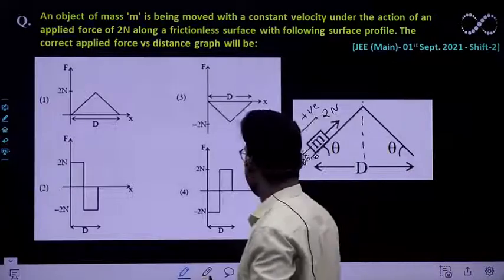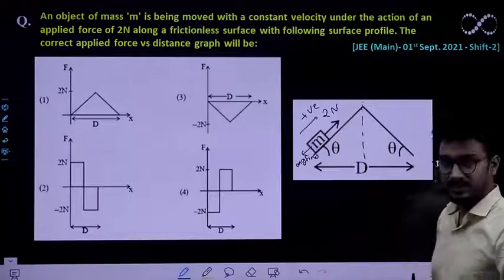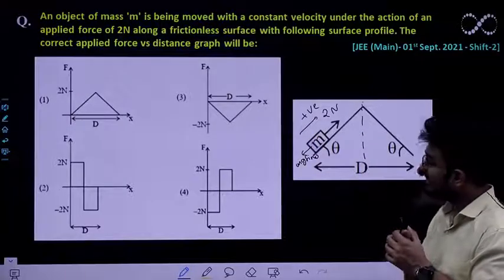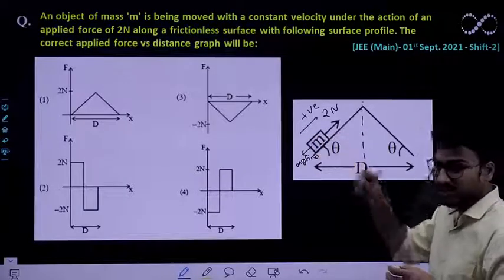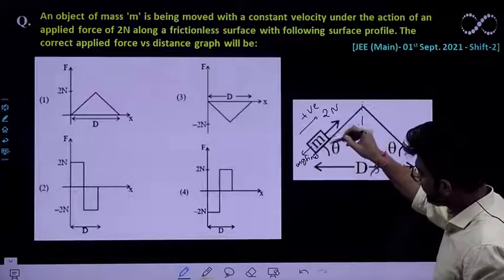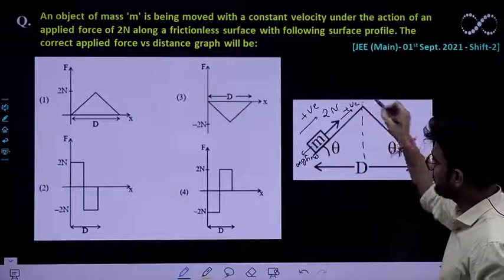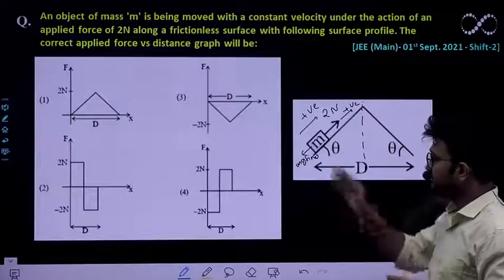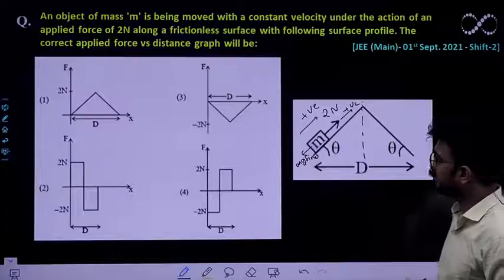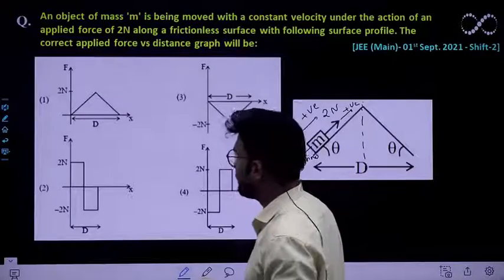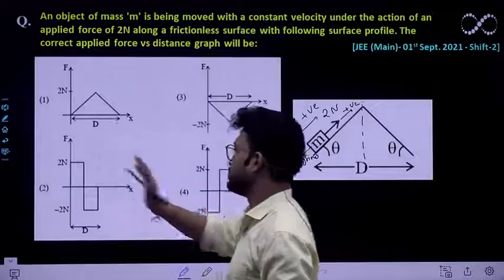So that means which option and it is positive also because it is there along the direction of motion of the direction of motion of small object. Because this small object is moving in the upward direction. So this is the direction which I have taken which we have taken as positive. So if it is going like this so that means this force is constant and it is positive. So you are left with only one option to choose from.